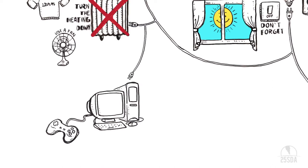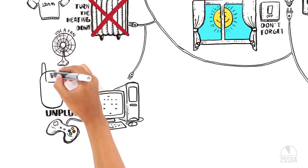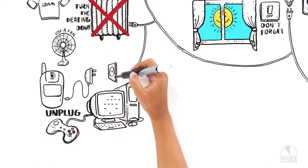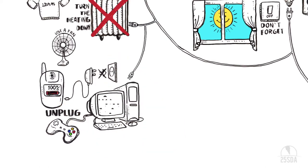When you're not using them, why not unplug some machines? Like computers, TVs, radios, and video game systems. Something we all need to know. Even after charging your phone, your charger will continue to use energy. So unplug it.